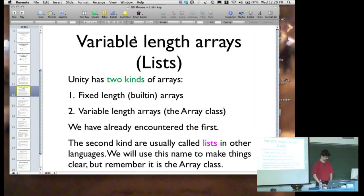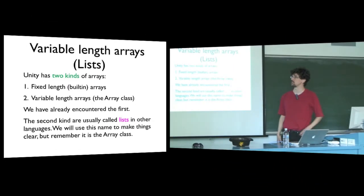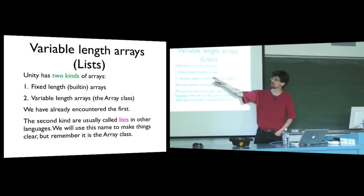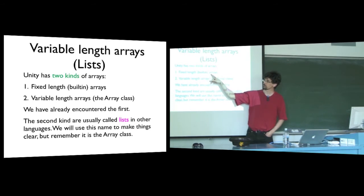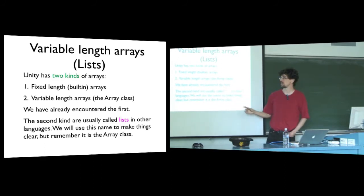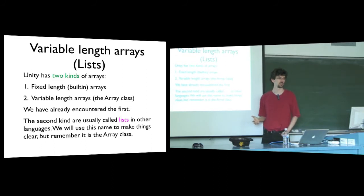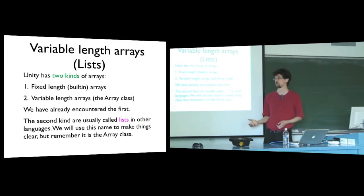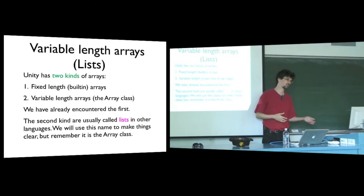Unity has two kinds of arrays. In a previous lecture we talked about fixed-length built-in arrays, which are what we've been using so far. But there are also variable-length arrays implemented using the Array class. This is really annoying — they have two things with the same name. I'm going to call variable-length arrays 'lists' because that's the common name in other programming languages. Most languages say an array has fixed length and a list has variable length. In Unity both kinds are always called arrays, but when I say 'list' I mean variable-length array.